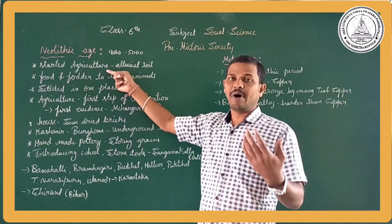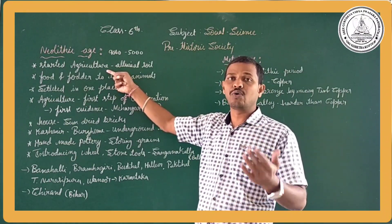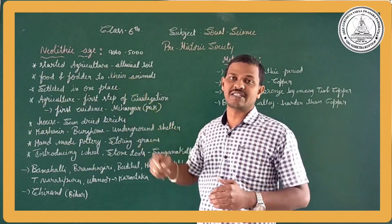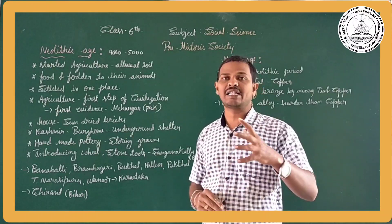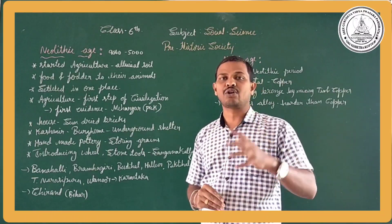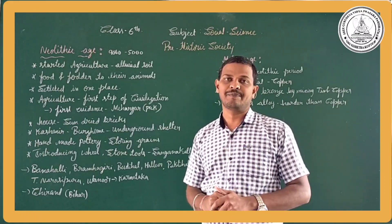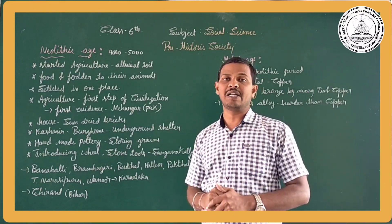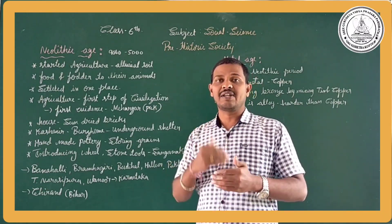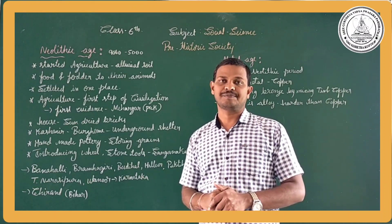We already know that in the Paleolithic age and Mesolithic age, people didn't know how to do agriculture. They could not settle in one place and were wandering to collect food. They were hunting animals and fishing — the major occupations of the Paleolithic and Mesolithic age. But Neolithic age people started to do agriculture, which is a major difference.